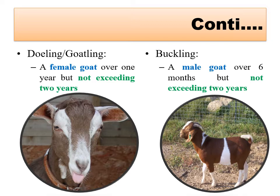Similar to bull calf and heifer calf, in goats we have goatling and buckling. Goatling means a female goat over one year of age but not exceeding two years - a growing female goat from one to two years. Buckling means a male goat over six months of age but not exceeding two years - a growing male goat from six months to two years of age.